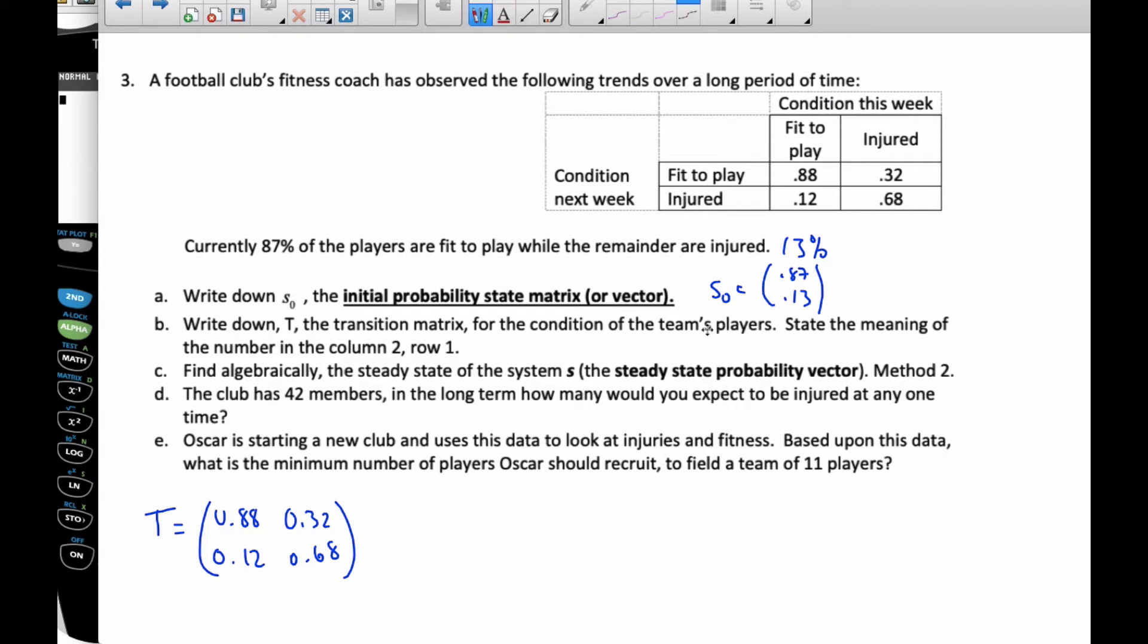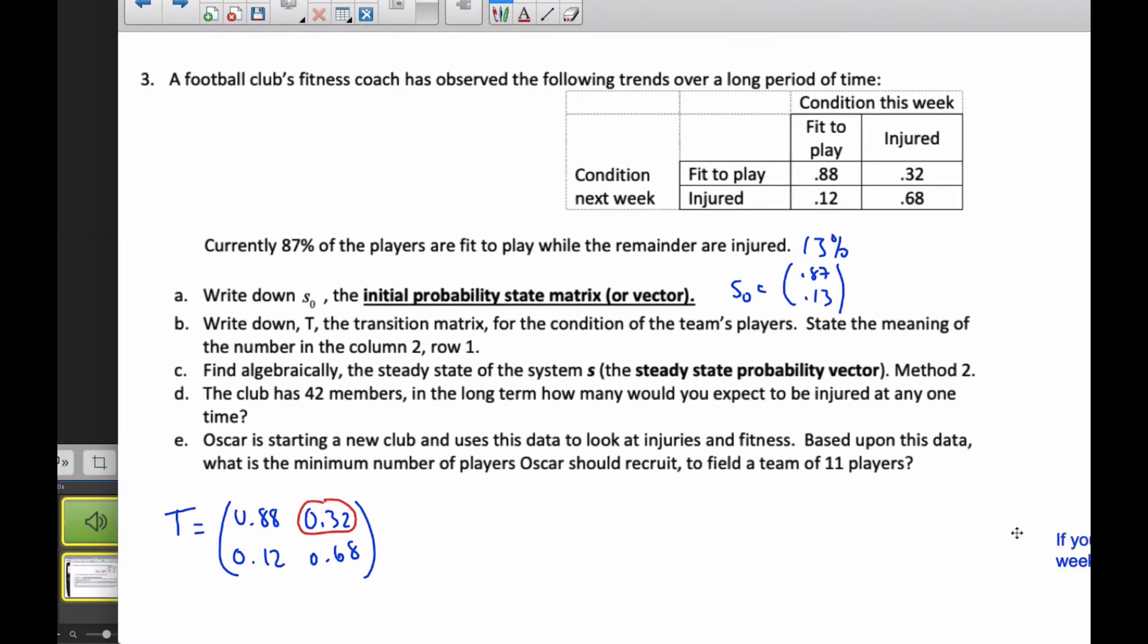And then it says state the meaning of the number of column 2, row 1. Well, column 2, row 1 is this value right here. So it means if you are injured this week, 32% of all the injured players are fit to play in the upcoming week. That's what this cell here means.